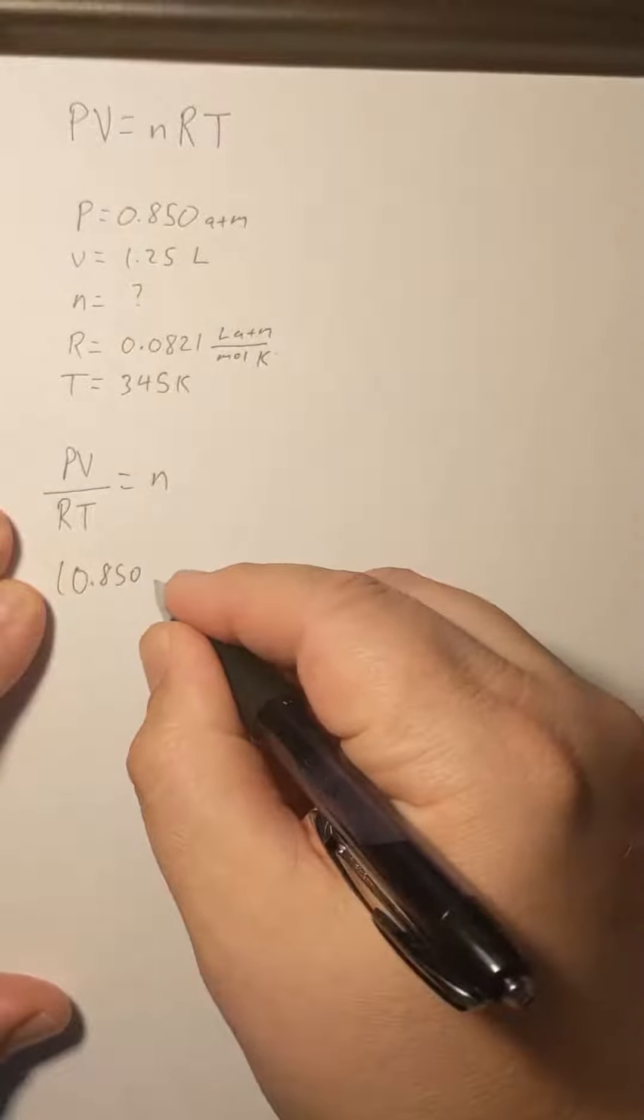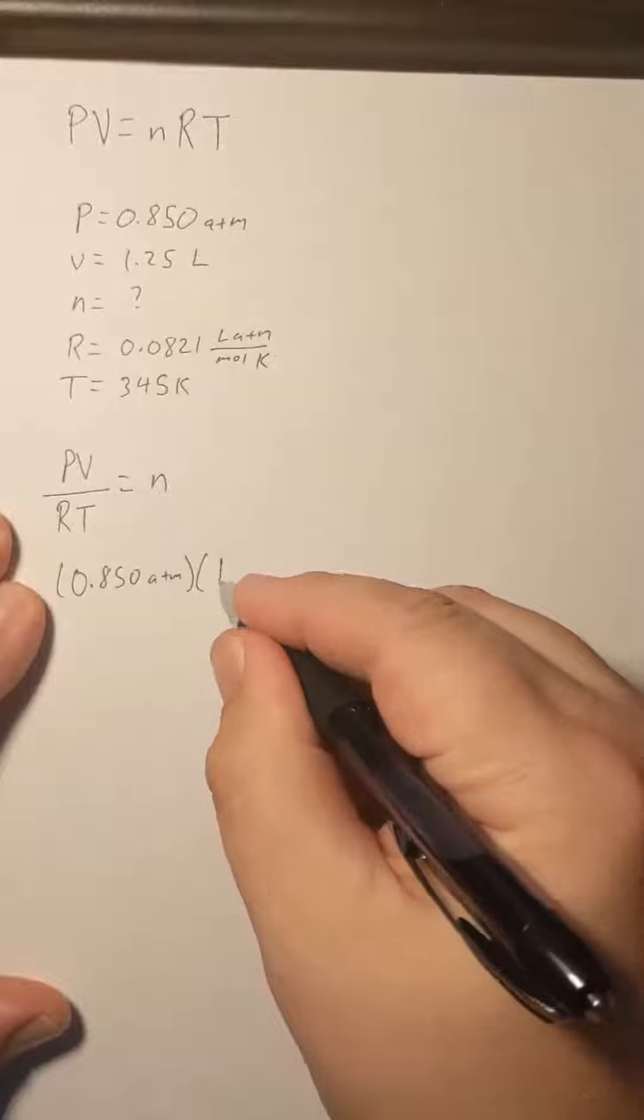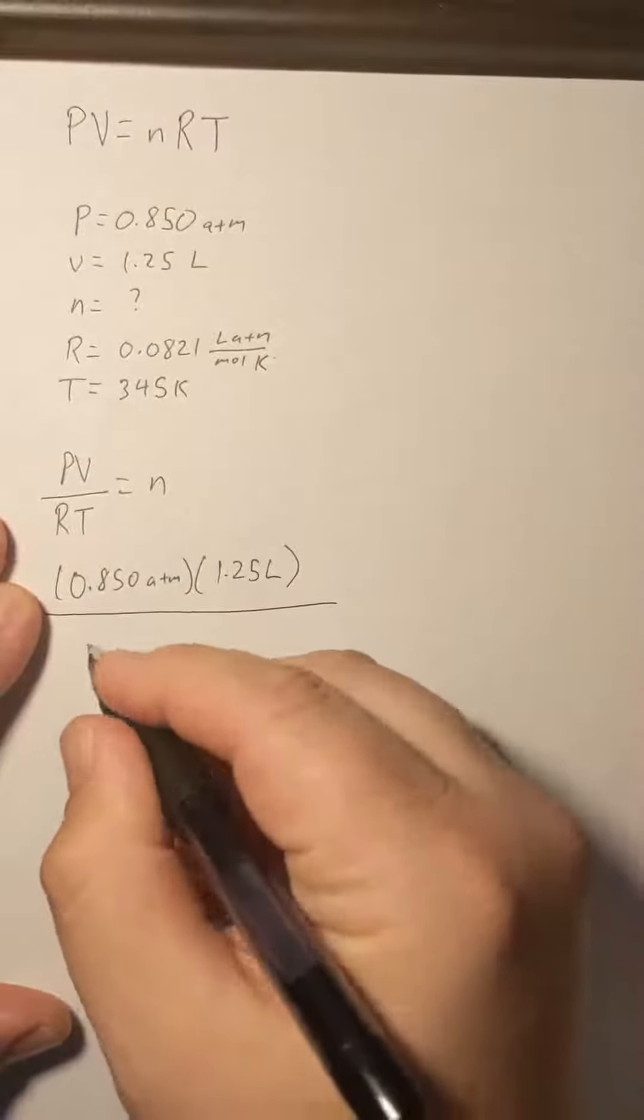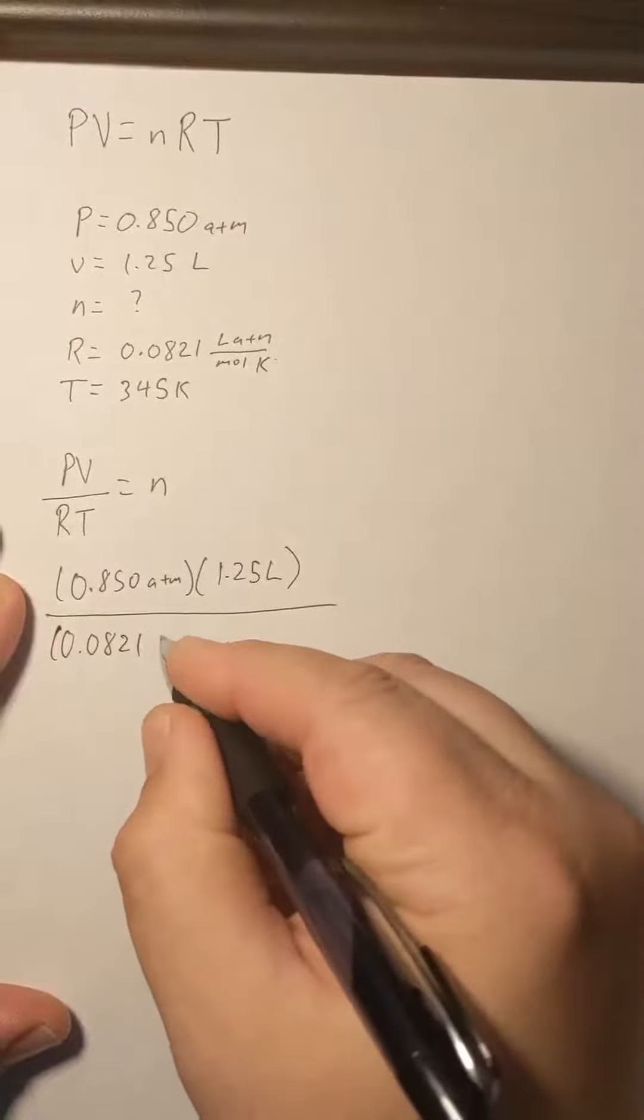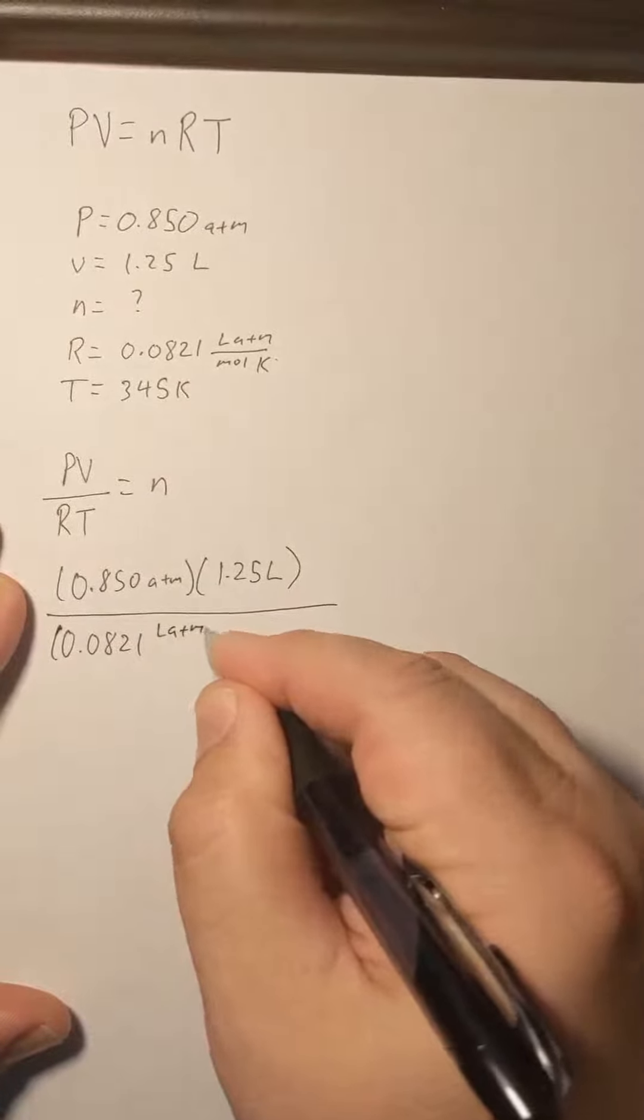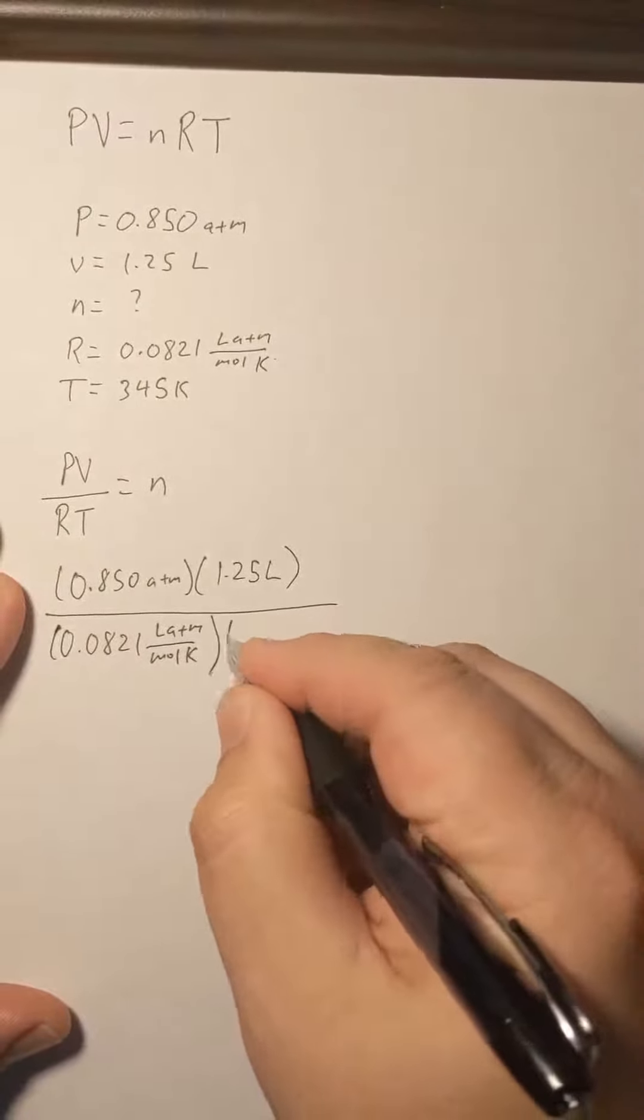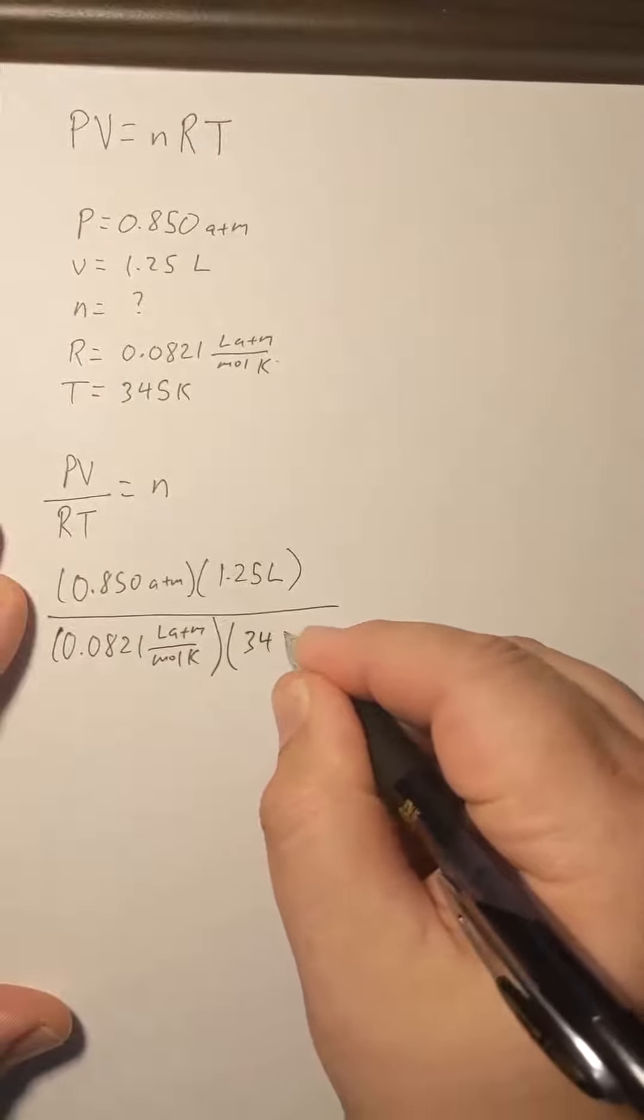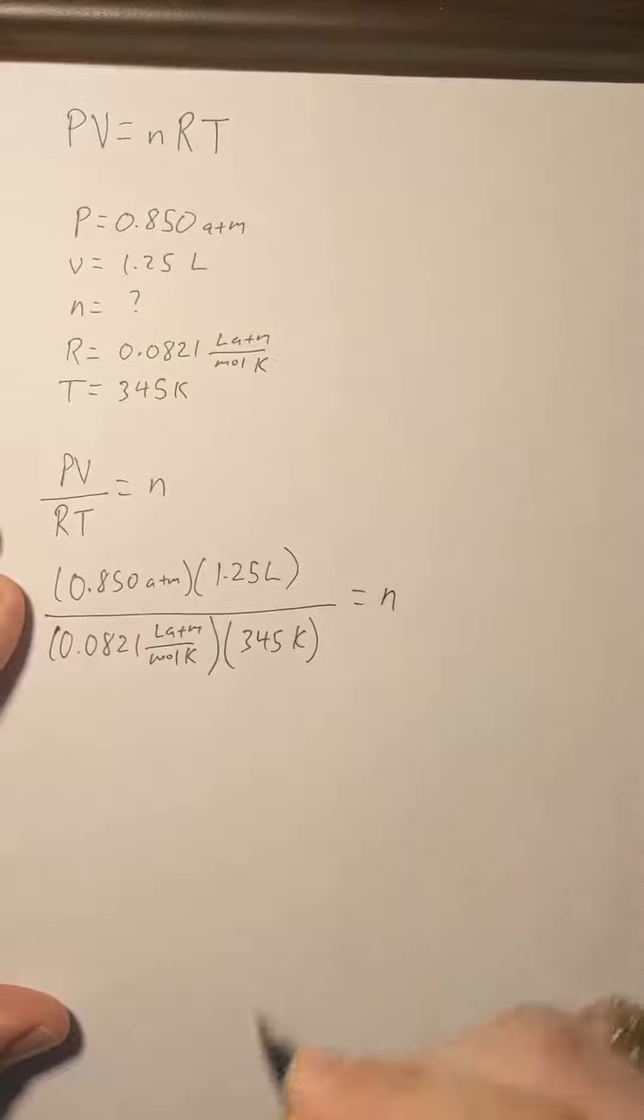0.850 atmospheres times 1.25 liters over 0.0821 liter atmosphere per mole Kelvin. And lastly, we'll multiply by our temperature, 345 Kelvin. And all of that will equal n.